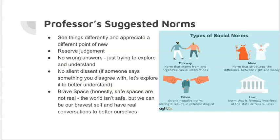Let's look at the suggested norms I have — these are norms I'm suggesting we adopt so we can have an excellent class together. The first norm is to see things differently and appreciate a different point of view. In this class, we're going to make it an expectation that we all attempt to see things in a new way and see the value in different perspectives. If I hold something up, I see it from my perspective, but you see it completely differently — and because of that, you see things I don't see. When we understand each other's perspectives, we both see that object in a much more real way.